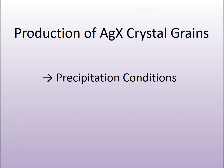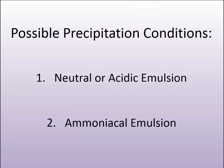They are the conditions found in either the single or the double jet experiment that we discussed earlier. There are usually two conditions, and they involve whether there is an excess of one ion over the other. In the acidic emulsion, there is an excess of halide.